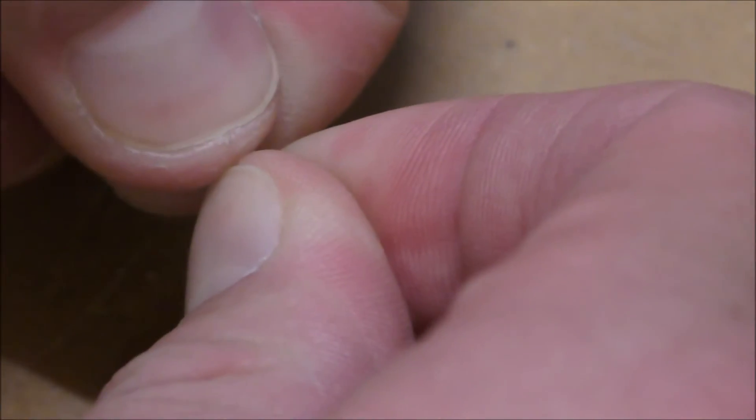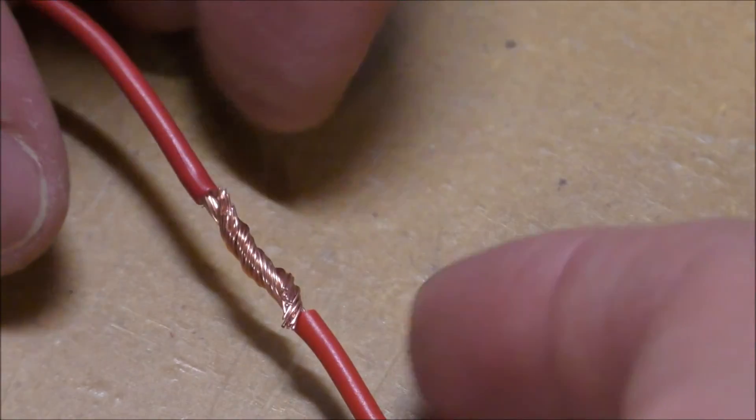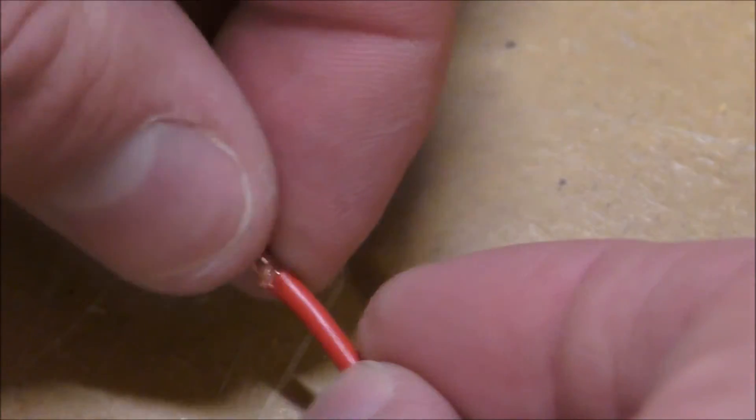This will not only increase the effectiveness of our join but will also assist us when soldering, as we don't need to hold on to one or both of the wires. Keep pressure on both wires and twist together like so. As we can see, we have a nice mechanical connection now.